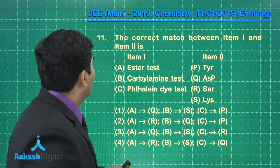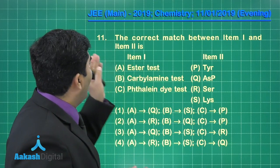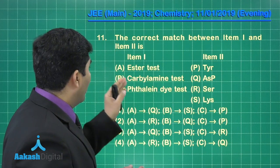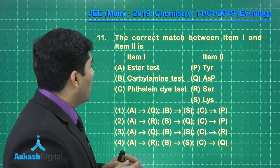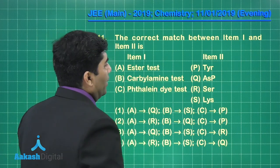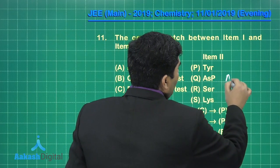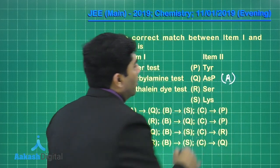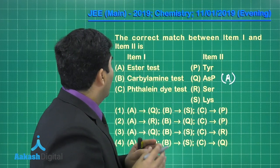The next question: the correct match between item one and item two. The item one, ester test. Ester test will be given by aspartame, so this is the correct option for ester test.